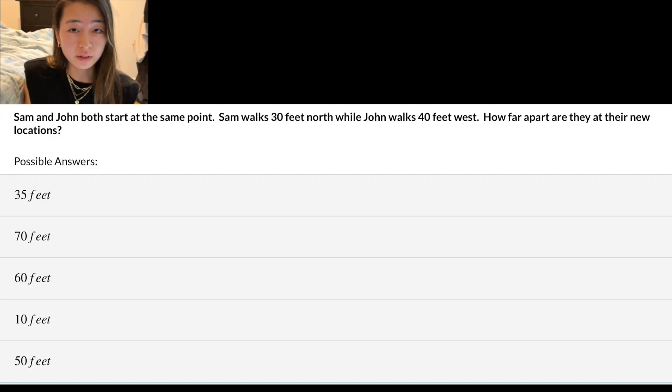How far apart are they at their new locations? This seems straightforward enough. First, we want to draw a diagram to keep track of information, and this also prevents mistakes from happening. First, we have Sam here, 30, and then John here at 40.